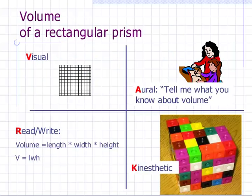Volume is a concept that lends itself easily to various learning styles. For visual learners, provide a diagram with measurements. Aural learners would do best with a verbal discussion. Providing written formulas and examples would be the best approach for read-write learners, and kinesthetic learners would learn well with manipulatives such as colorful pop blocks, one-inch wooden cubes, or sugar cubes.